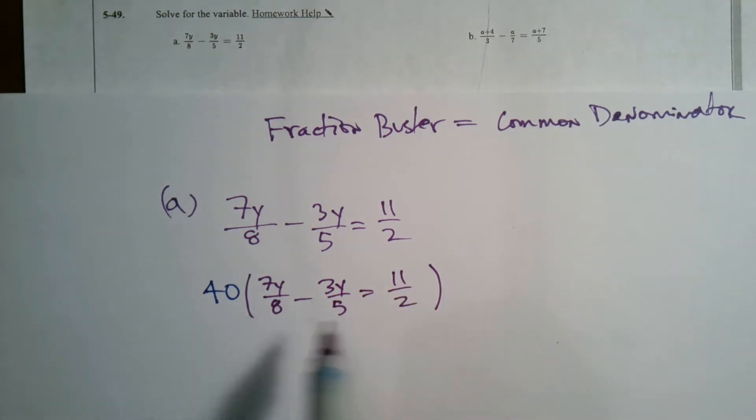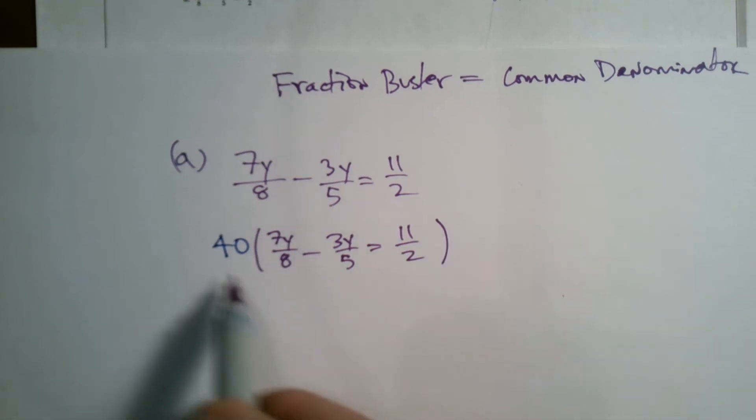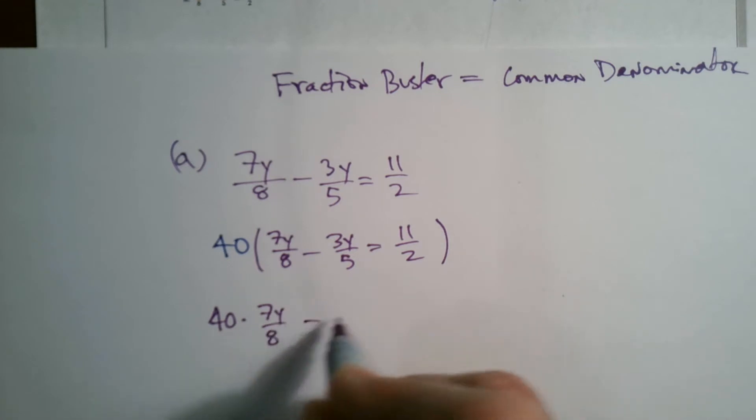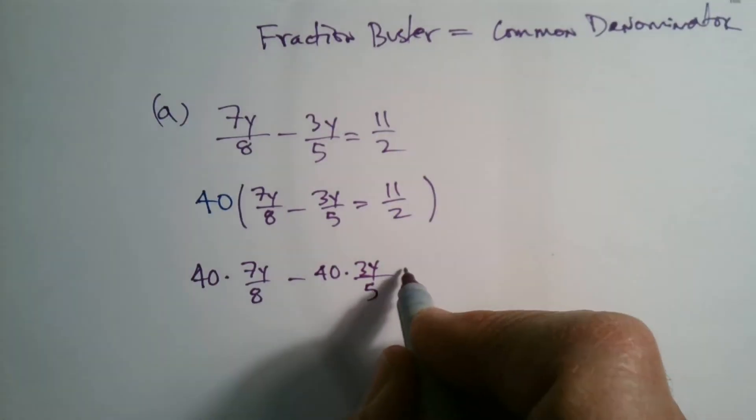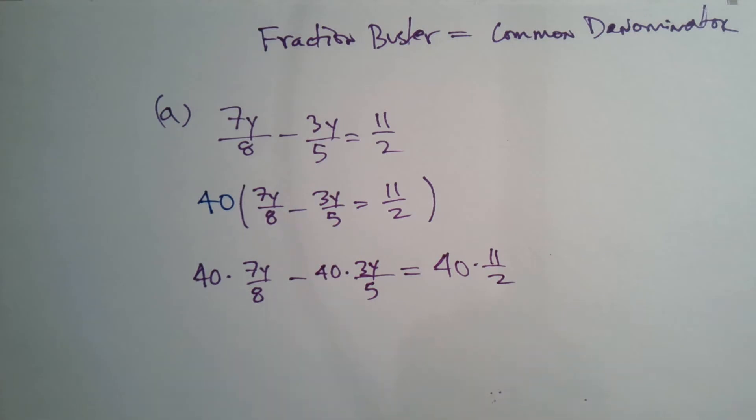So I'm saying 40 times every one of those terms. So I take 40 - I'm using parentheses to show because I'm going to distribute this all the way through each term. So I'm going to rewrite again: 40 times 7y over 8 minus 40 times 3y over 5 equals 40 times 11 over 2. So I'm multiplying everything by 40.